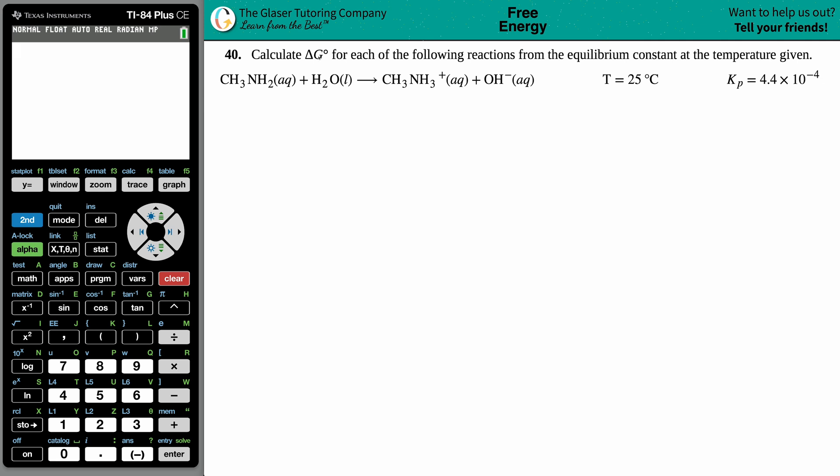Number 40. Calculate the delta G naught for each of the following reactions from the equilibrium constant at the temperature given.